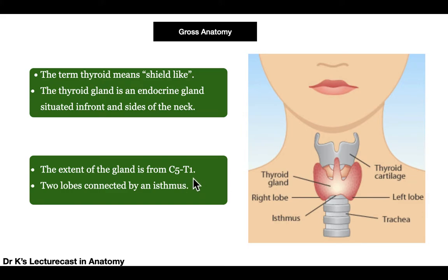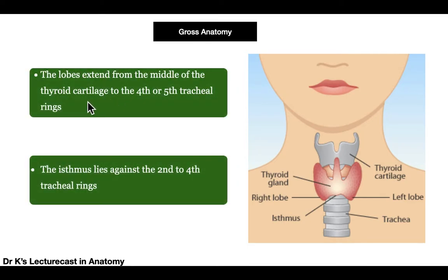Posteriorly, the gland extends from the fifth cervical vertebra to the first thoracic vertebra. There are two lateral lobes connected by a bridge-like structure called the isthmus. So the thyroid gland is an endocrine gland situated in front and sides of the neck, from the middle of the thyroid cartilage to the fifth or sixth tracheal rings, with the isthmus lying against the second to fourth tracheal rings.